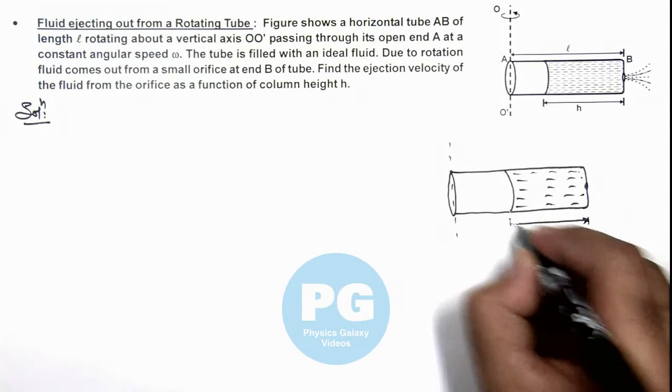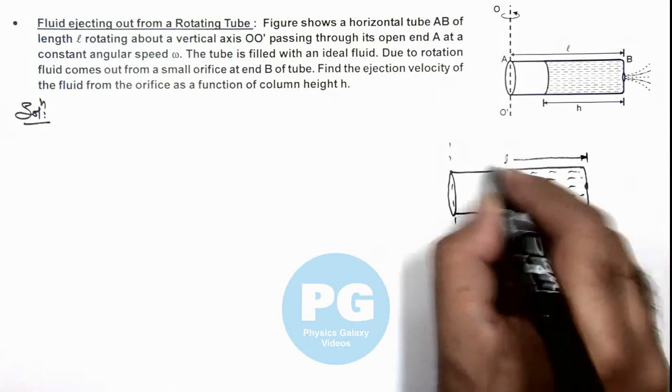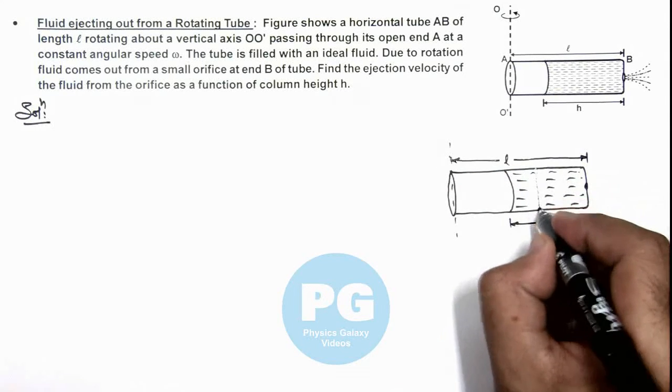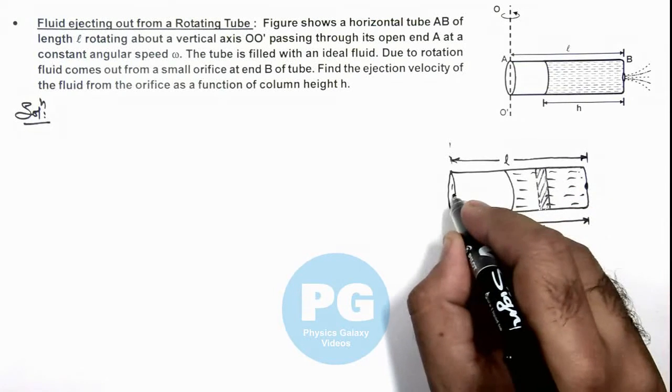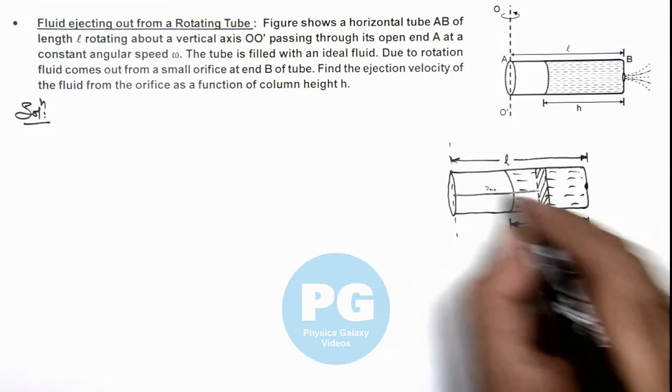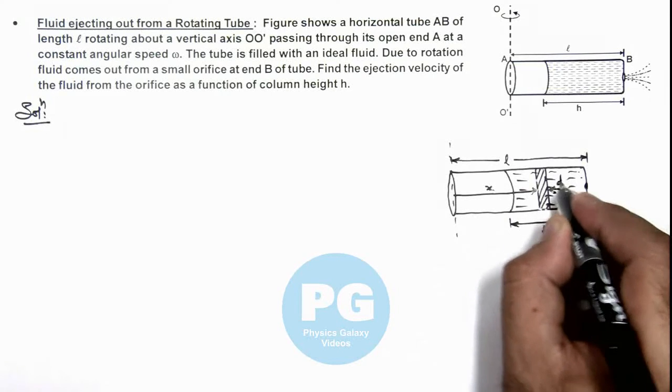Then to analyze the pressure in the liquid, we consider an elemental section of width dx within the liquid. We are taking this section at a distance x and the width of this section we consider as dx.